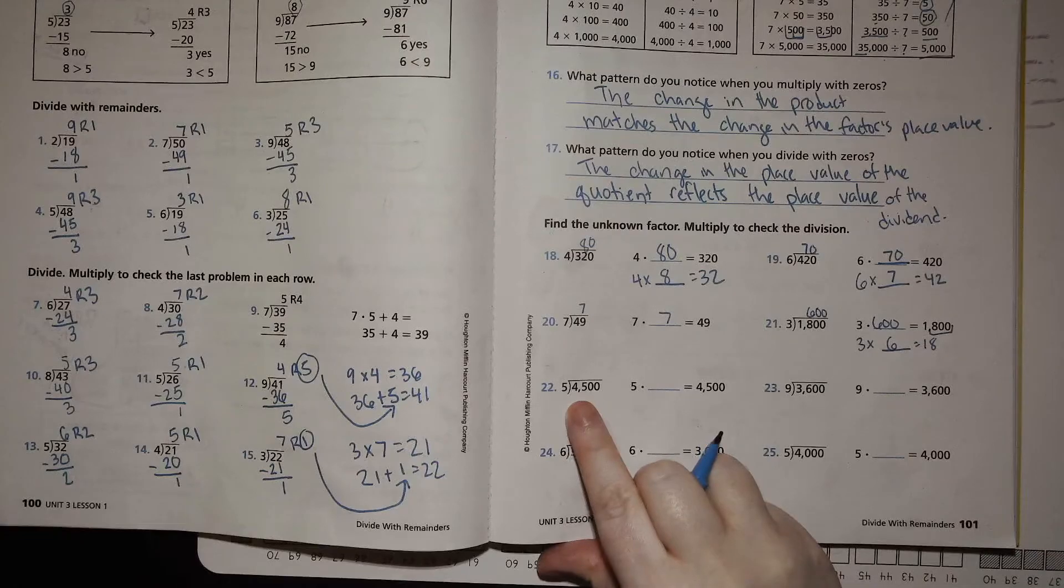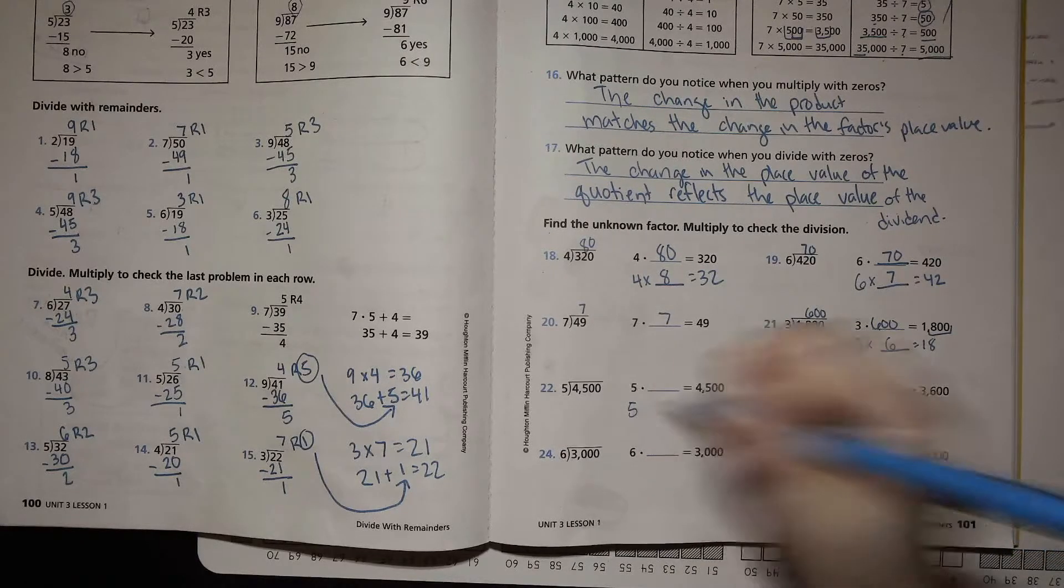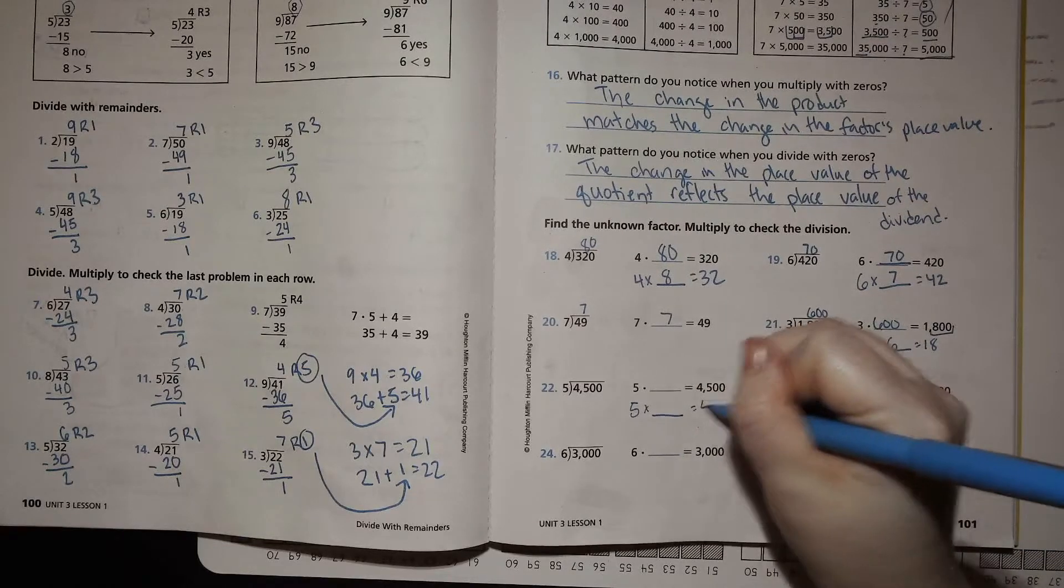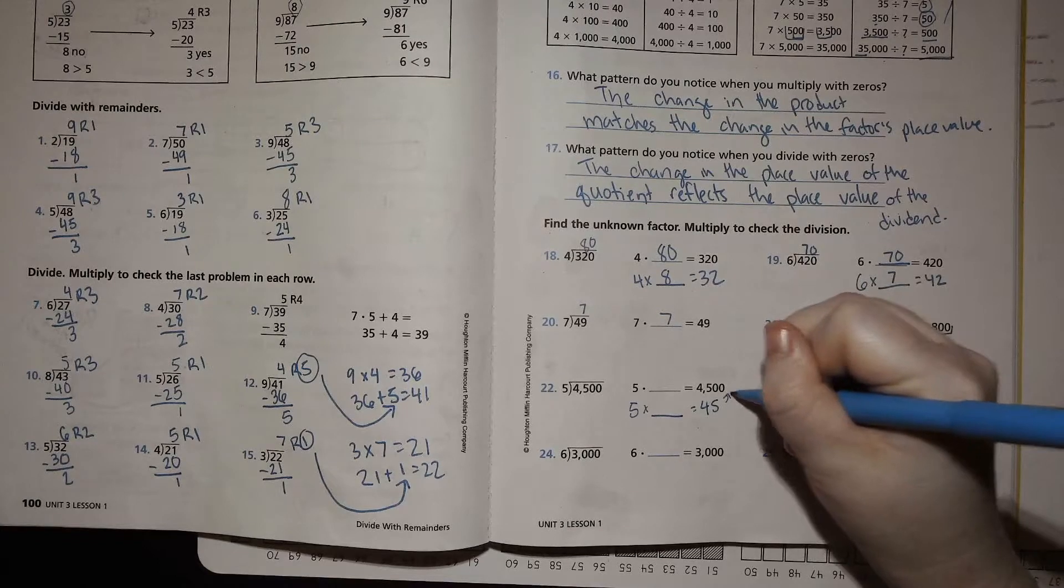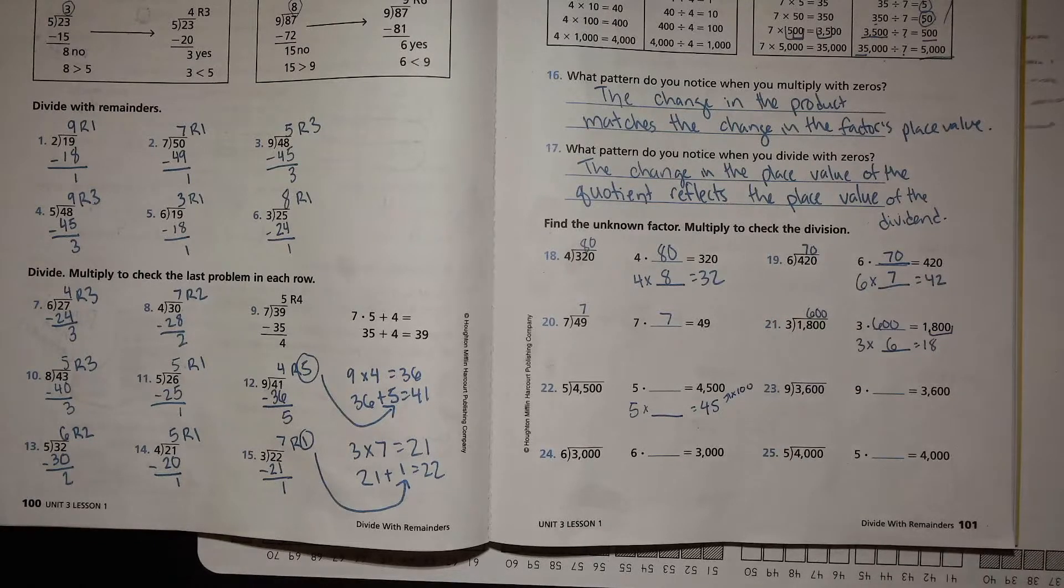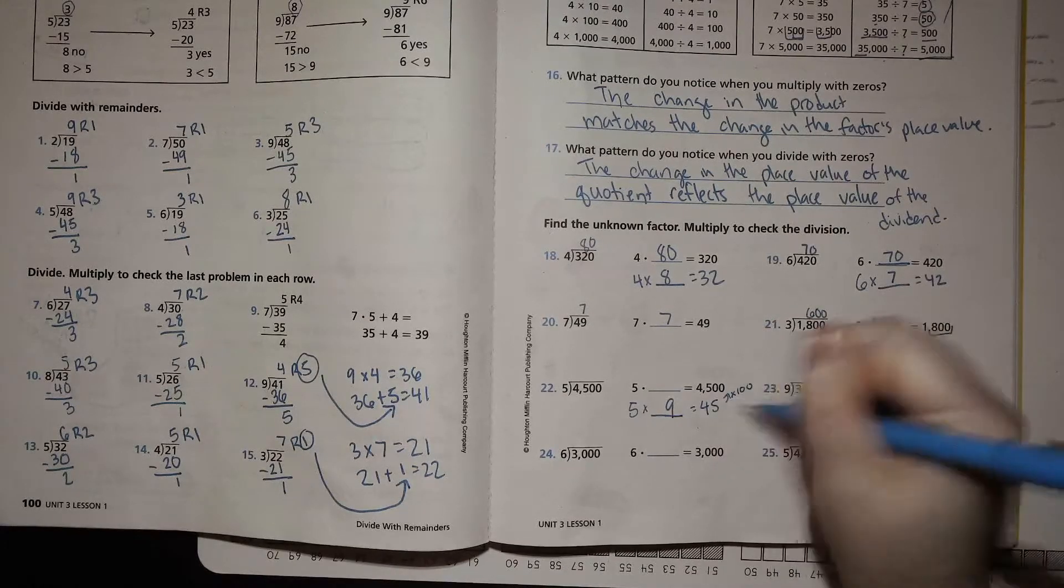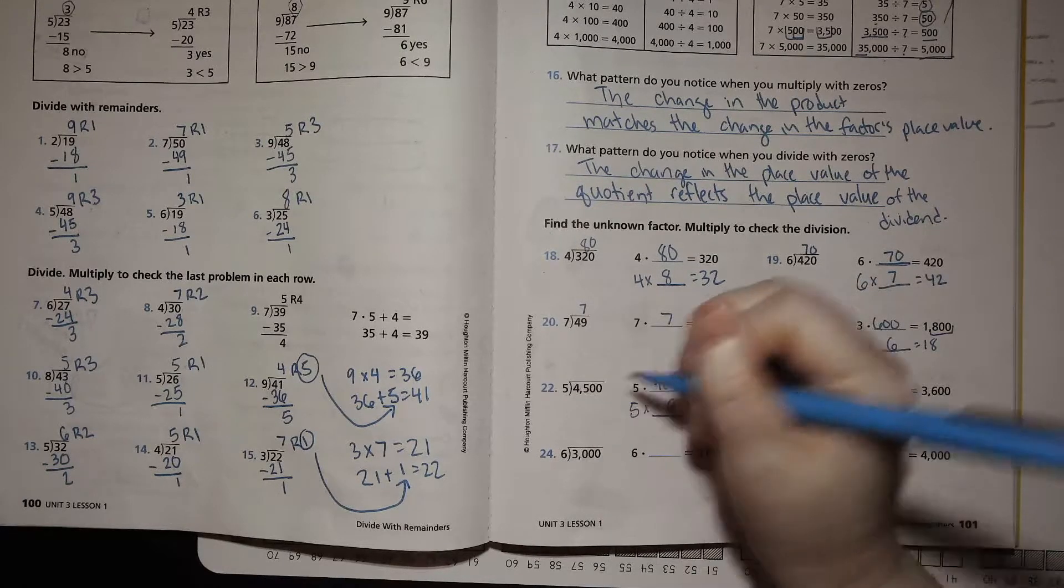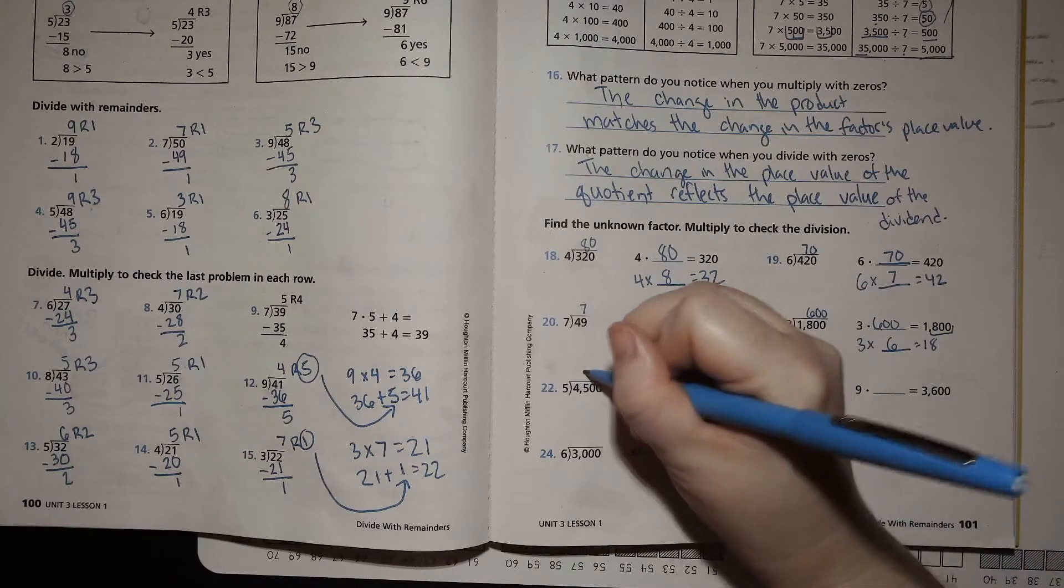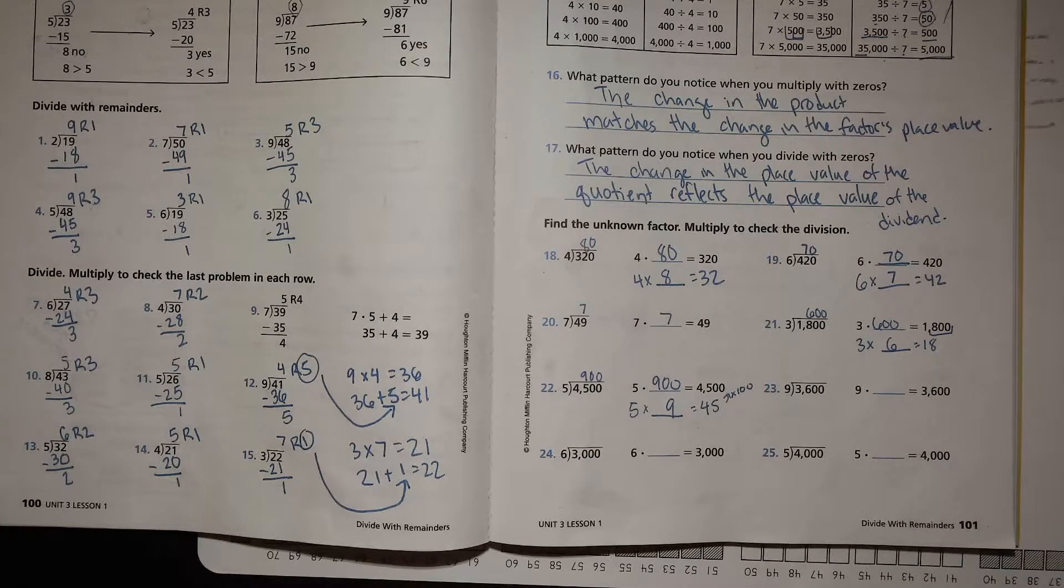4,500 divided by 5. 5 times what is 45? 5 times what is 45? We're just going to multiply by 100, right? So 5 times what is 45. 9. So times that by 100. 900. 4,500 divided by 5 is 900, right? Okay.